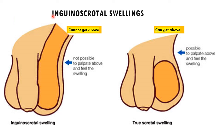Once in the scrotum, the lump is described as an inguinal-scrotal swelling, extending from the inguinal region into the scrotum. You cannot get above these swellings — there is no palpable upper border, and this is confirmatory for indirect inguinal hernia. In the case of a purely scrotal mass such as a testicular mass, it is easy to get above the swelling. So: if you cannot get above the swelling, inguinal hernia is the diagnosis; if you can get above it, it is unlikely to be inguinal hernia.